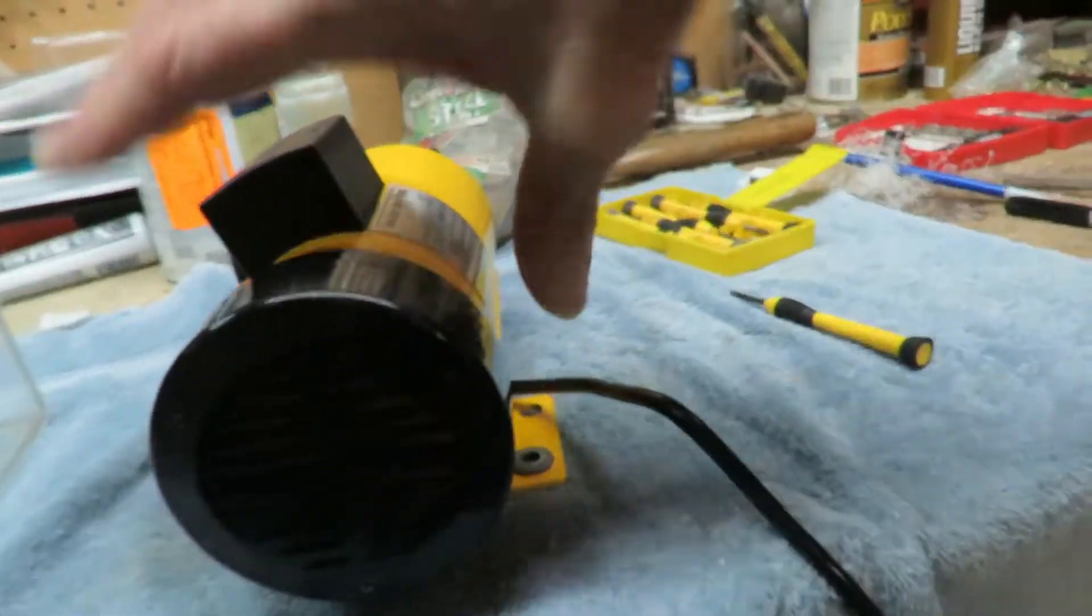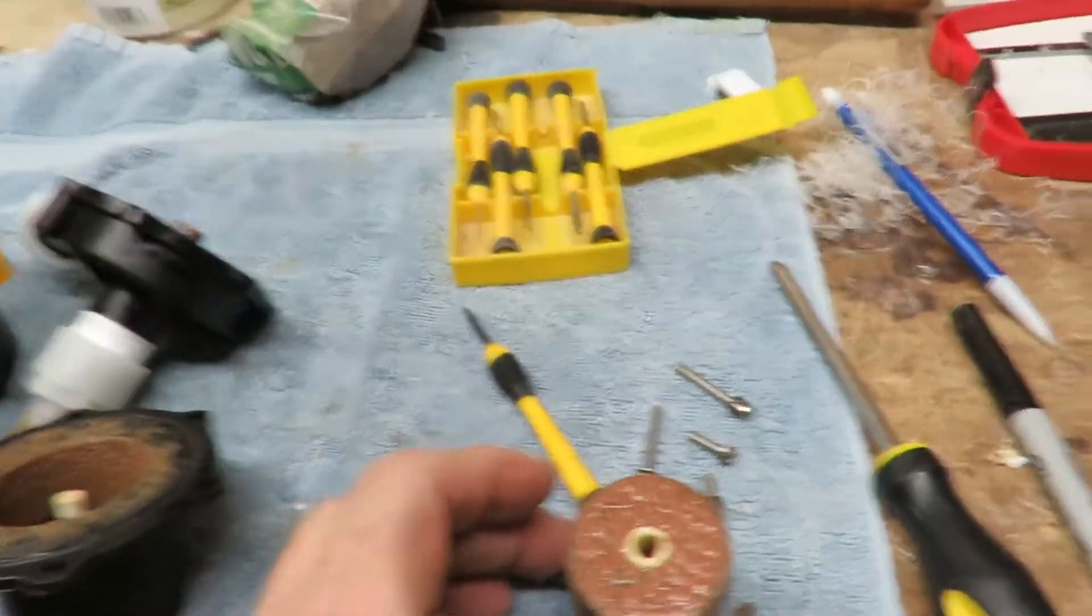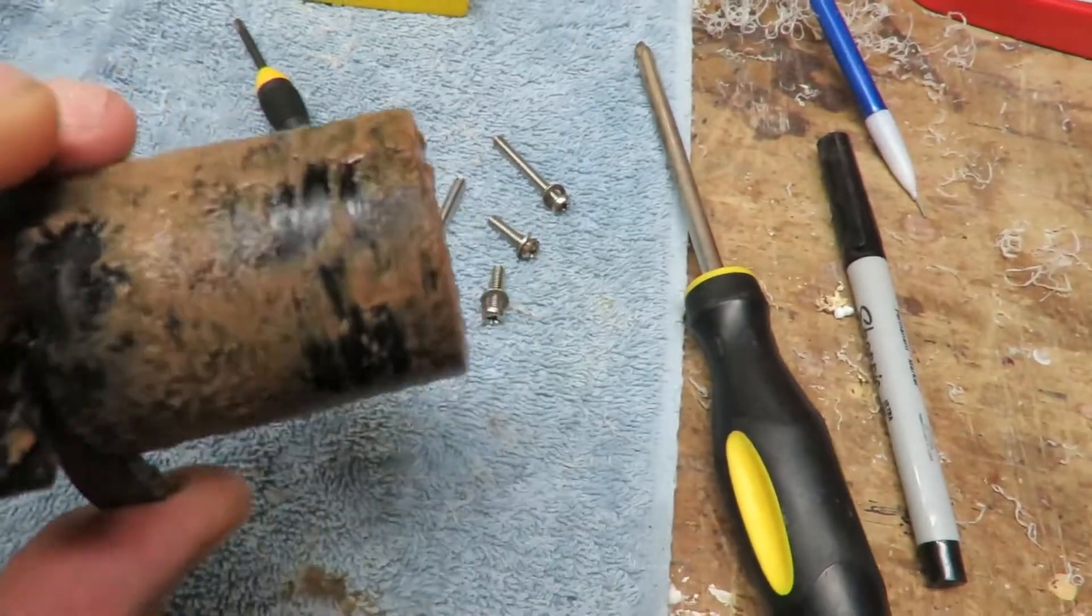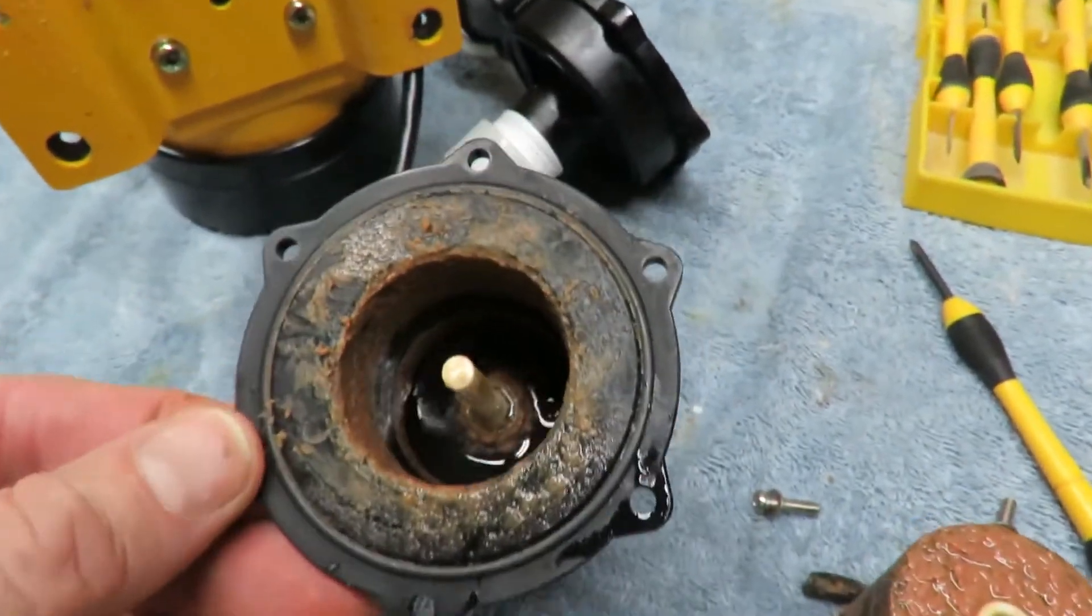I got the magnet out—this one's bad. Look at the gunk on that thing. They move because this magnet spins inside that magnet because they're opposite, and that's how it spins. I popped this out so I can clean it.